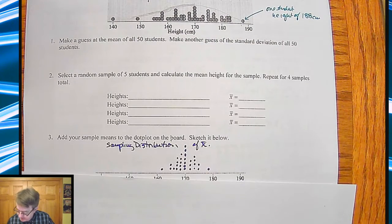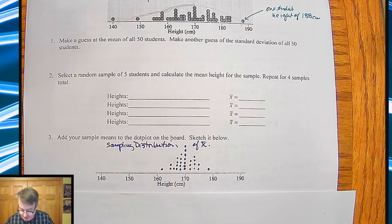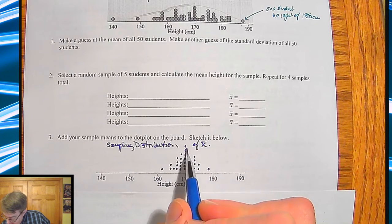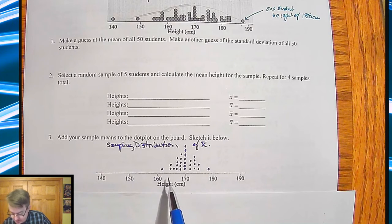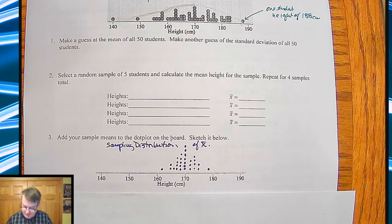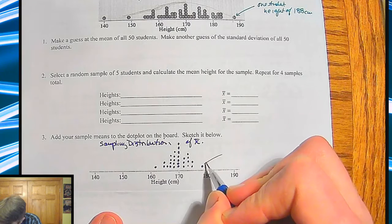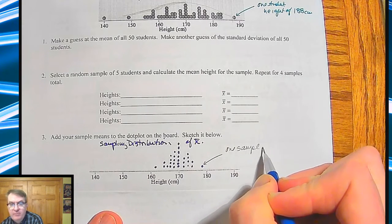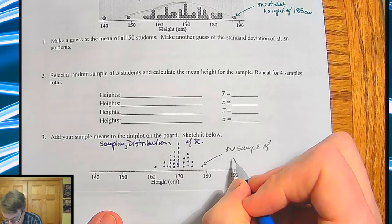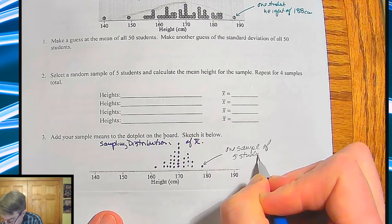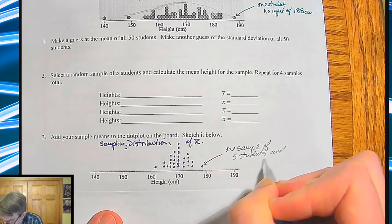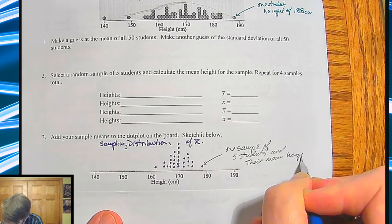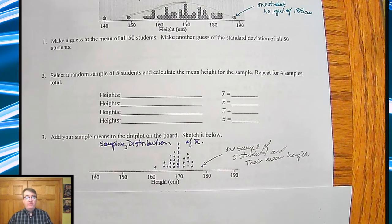So this is an example, this isn't quite all the points, but this is similar to what I had last year in class. So now again, you kind of see the mean is happening right around here. My mean was right around 170 again, but notice a couple of things here. Actually, don't worry. I'm going to wait for that. So what is this point like right here? This is one sample of five students and their mean height.